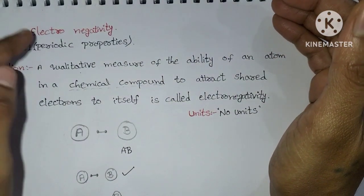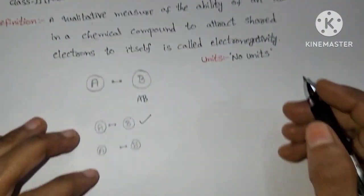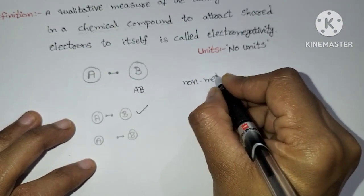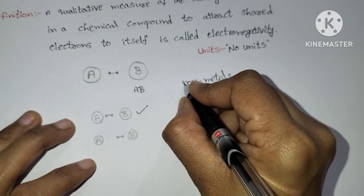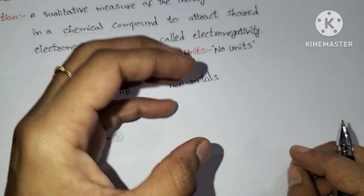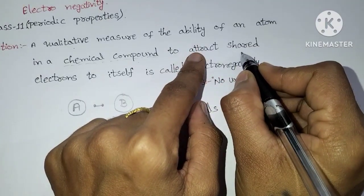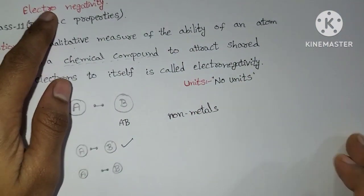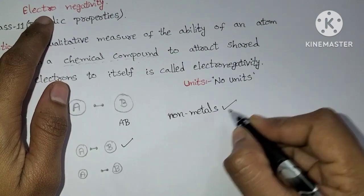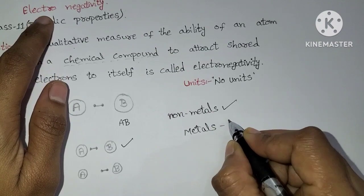Electronegativity is generally more in non-metals, because non-metals have a gaining-of-electrons nature, so there is a greater tendency to attract the shared pair of electrons. Therefore, electronegativity is more in non-metals and less in metals.